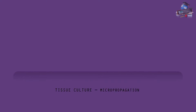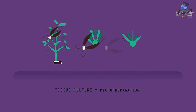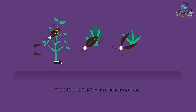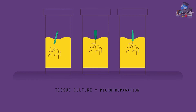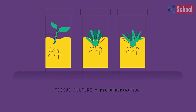A few cells are taken from the parent plant and placed onto a nutrient jelly using aseptic technique. This means making sure no microorganisms contaminate the jelly. The cells will then start to differentiate and form new plants.